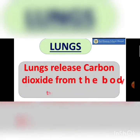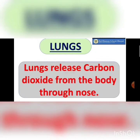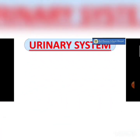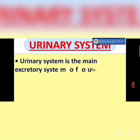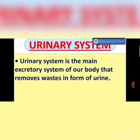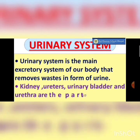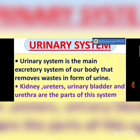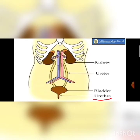The next excretory organ is the lungs. When we breathe in we take in oxygen, and carbon dioxide is released from the body through the lungs. The urinary system is the main excretory system of our body, removing waste in the form of urine. The kidneys, ureters, urinary bladder, and urethra are the parts of this system. You can have a look at the diagram of the urinary system.